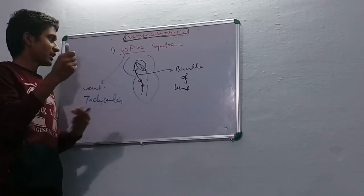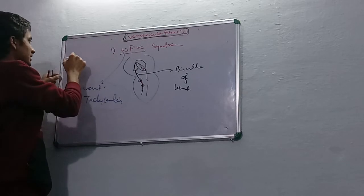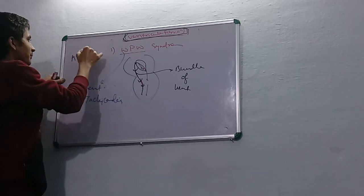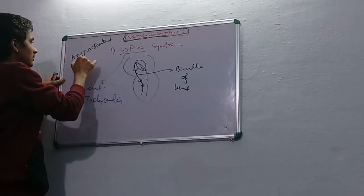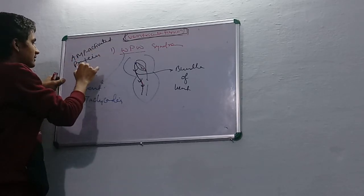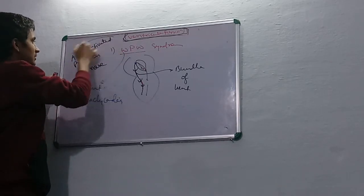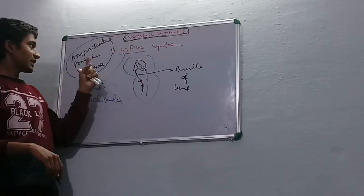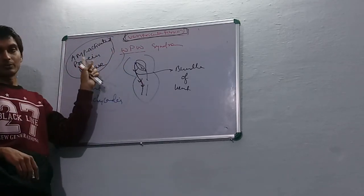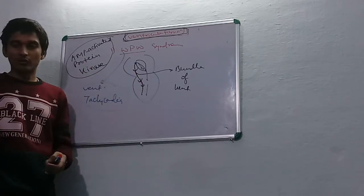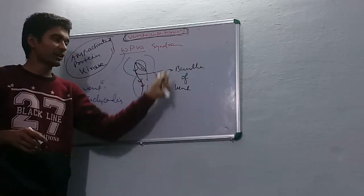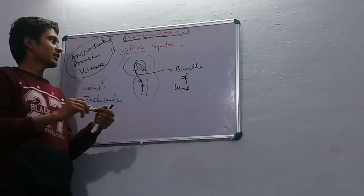The normal pathway is regulated by AMP-activated protein kinase. The formation of the Bundle of Kent is associated with AMP-activated protein kinase. This will regulate the formation, and if there is any malfunctioning in this protein kinase, then an abnormal bundle can be formed.